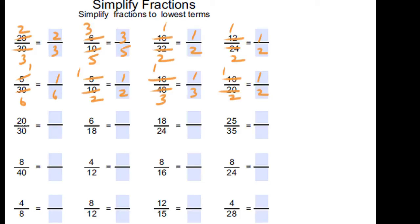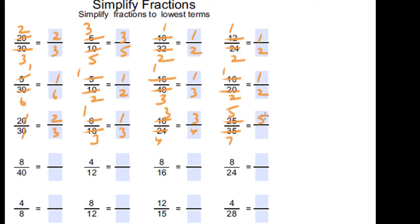For 20 over 30 — another way to do it: because both numbers have a zero at the end, the zeros can be cancelled, giving 2 over 3. 6 times 1 is 6 and 6 times 3 is 18, so 1 over 3. 6 times 3 is 18 and 6 times 4 is 24, so 3 over 4. 5 times 5 is 25 and 5 times 7 is 35, so 5 over 7. 8 times 1 is 8 and 8 times 5 is 40, so 1 over 5 is the simplified form of 8 over 40.